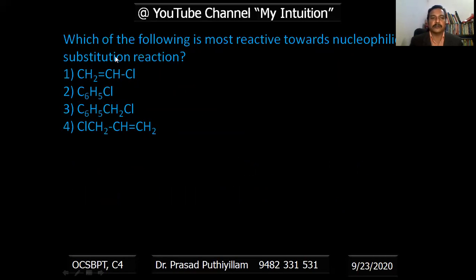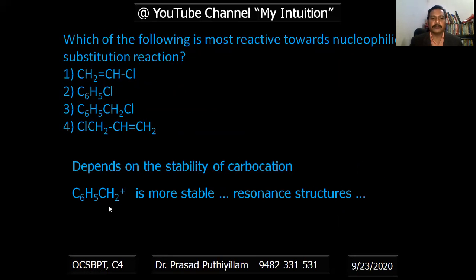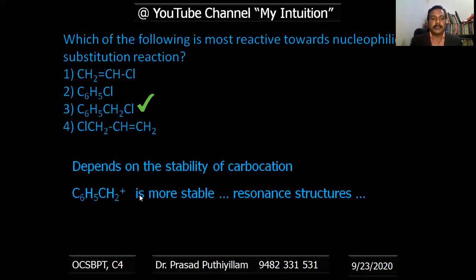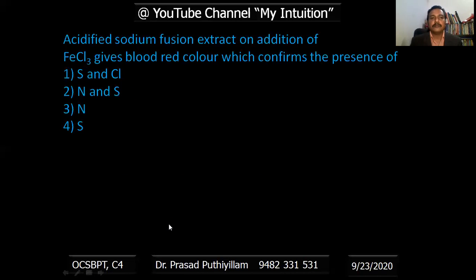Which of the following is most reactive towards nucleophilic substitution? The most reactive is option three: C₆H₅–CH₂⁺ (benzyl type). The benzene ring has alternating single and double bonds, so the positive charge on the CH₂ can be distributed throughout the ring, giving more resonating structures. This highly stable carbocation strongly supports the nucleophilic substitution reaction.